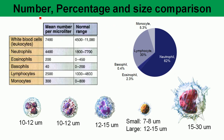Now let's see how these blood cells are defined by their number, percentage, size, and composition. The neutrophil is the most abundant cell, with a mean of 4,400 per microliter of blood. The eosinophil is lower at about 200 per microliter, and the basophil is about 40 per microliter.